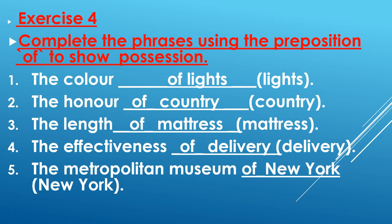Third sentence: the length dash mattress — the phrase will be: the length of mattress. Fourth sentence: the effectiveness dash delivery — the phrase will be: the effectiveness of delivery. Fifth one is: the metropolitan museum dash New York — the answer will be: the metropolitan museum of New York.